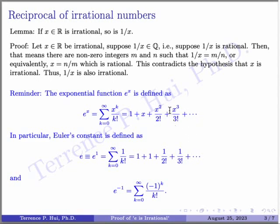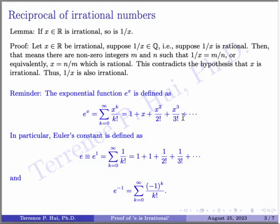Here's a reminder. In real analysis, you learn something called the exponential function E to the X. E to the X is defined by this infinite series: the sum of X to the K over K factorial, where K runs from 0 to infinity, with 0 factorial defined as 1. When you expand this out, you get 1 plus X plus X squared over 2 plus X cubed over 3 factorial, and so on. In real analysis, we prove that this exponential function is always finite for every value of X.